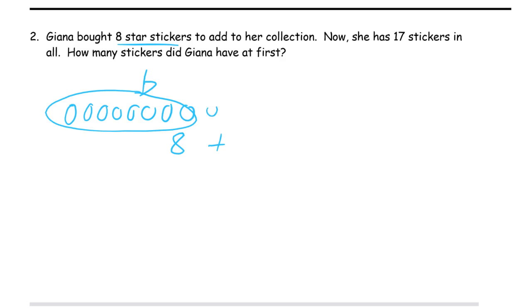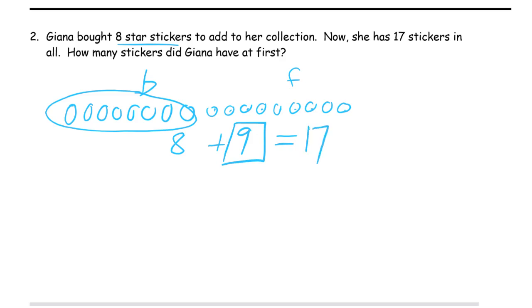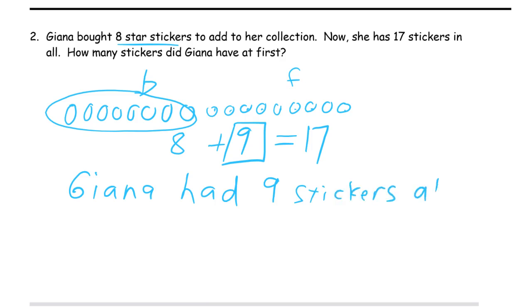So continuing from eight: nine, ten, eleven, twelve, thirteen, fourteen, fifteen, sixteen, seventeen. And these are the ones she had at first — labeled F for first. That's one, two, three, four, five, six, seven, eight, nine. So nine. That's what we had to figure out — I'm going to box that. We knew 17 would be the total. So Giana had nine stickers at first.